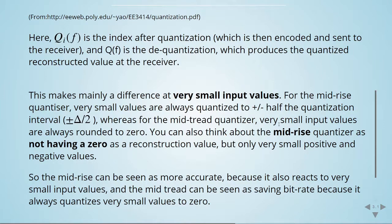So the mid-rise is perhaps more accurate because it also reacts to small input values. But the mid-tread can be seen as saving the bit rate because it quantizes very small values to zero.